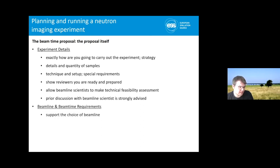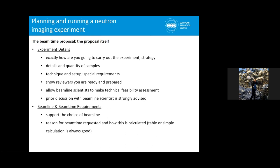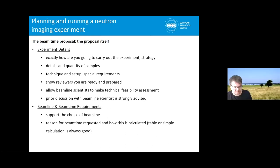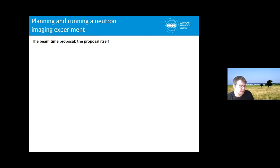Address beam time requirements and support the choice of this particular beamline. Give a rough estimate of why — for example, if you request three days, explain: I need half a day for setup, one overnight for this type of measurement, and then another. This can be relatively short. The expected results and significance should also be highlighted.